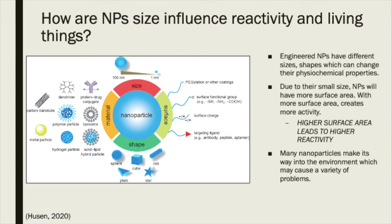Because NPs are so small, this is a very important thing to note. Small sizes create more surface area. With more surface area, this creates more activity. Therefore there are more spaces and places where chemistry reactions can occur. So high surface area leads to higher reactivity. As the demand and production of nanomaterials or nanoparticles are increasing, thus their availability in air, soil, and water systems are increasing too. This makes NPs have the potential for making their way into the environment, which can cause possible problems.